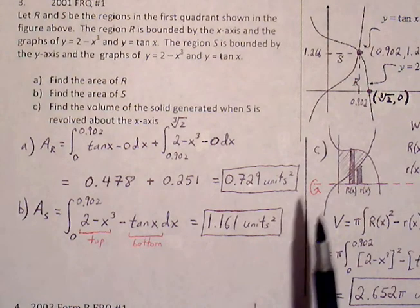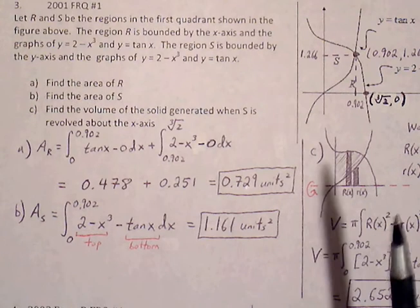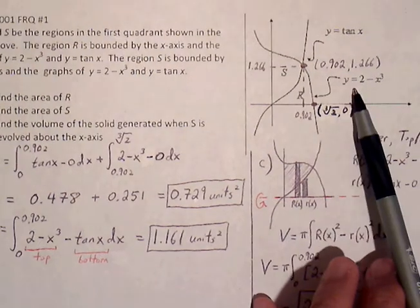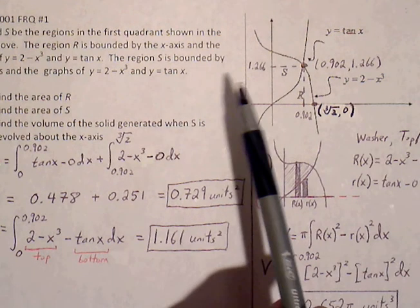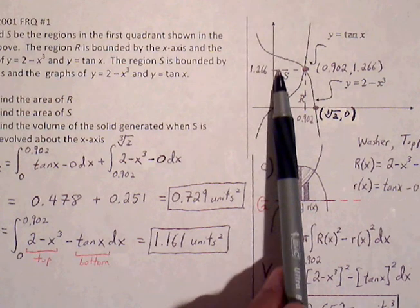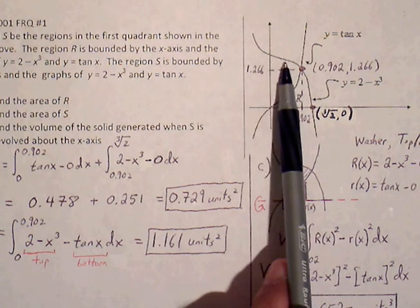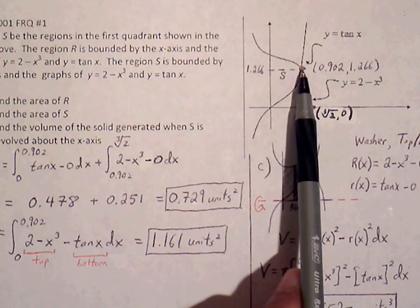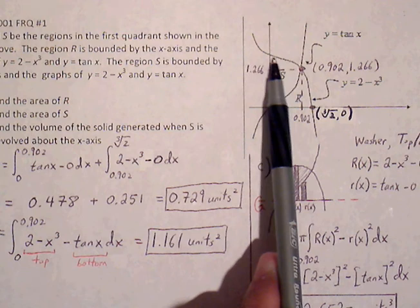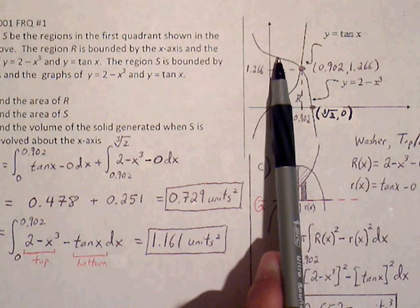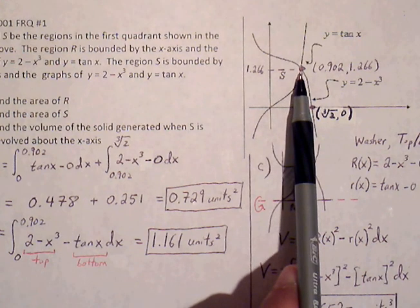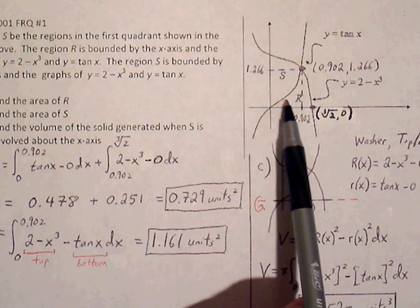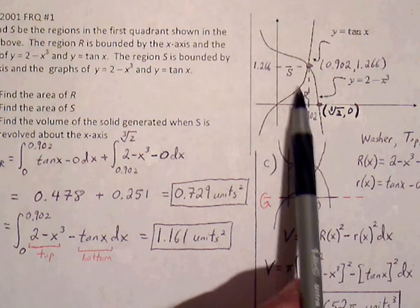For S, we're going to try top minus bottom because doing right minus left would require changing equations to x equals, which is possible but messier. With top minus bottom, we see that consistently in region S the top curve will be 2 minus x cubed and the bottom curve will be tangent of x. So no matter where you draw your rectangle, the top and bottom curves are always consistent. There's no need to split this up into two integrals — we can write it in one integral.